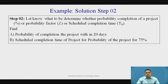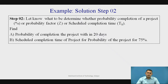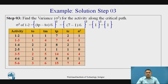In the first step, we constructed the normal network diagram, performed the forward pass to define project duration, performed the backward pass, and identified critical and non-critical activities using floats. In the second step, we identify what is expected: finding the probability of completion within 20 days, and finding the scheduled completion time for a probability of 75 percent.